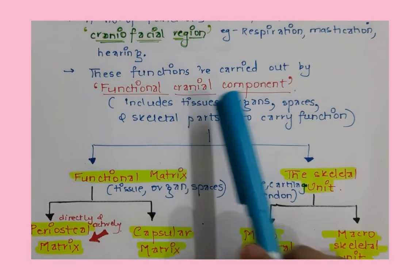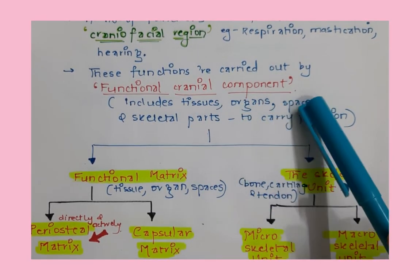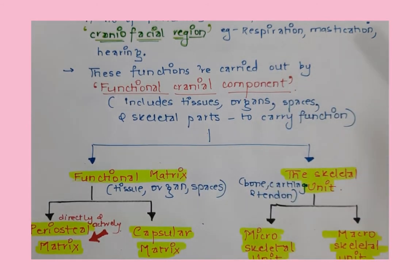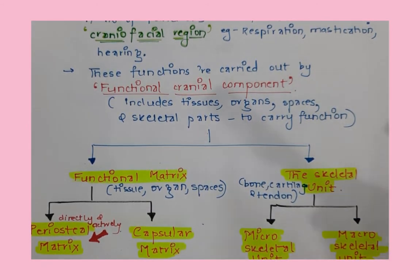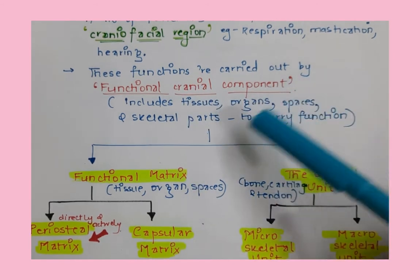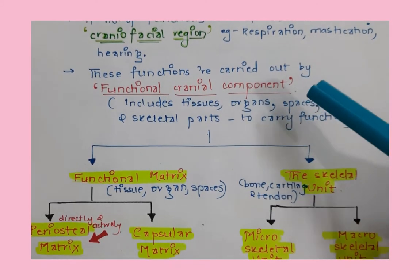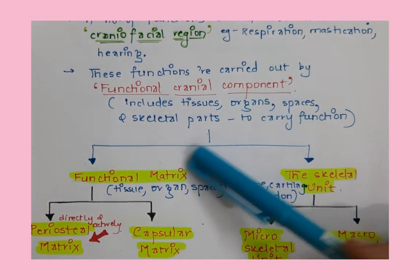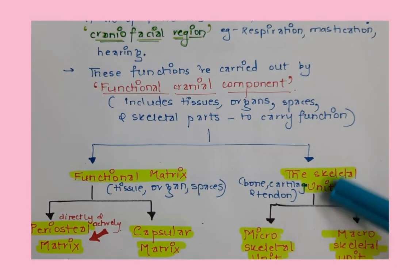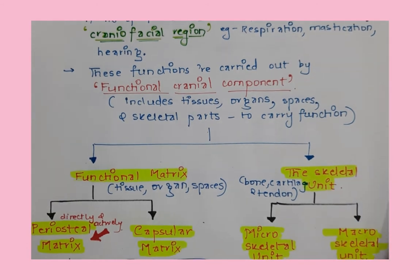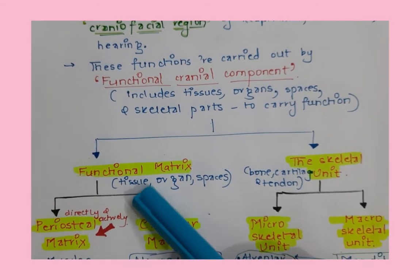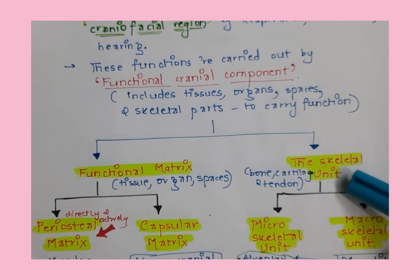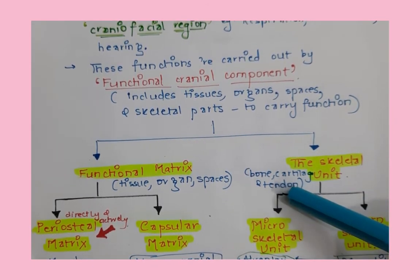The functional cranial component includes tissues, organs, spaces, and skeletal parts that carry out functions like respiration, hearing, and speech. We divide this functional cranial component into the functional matrix and skeletal units. The functional matrix includes tissues, organs, and spaces, while the skeletal units contain bones, cartilage, and tendinous tissue.